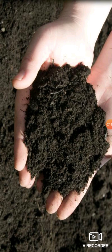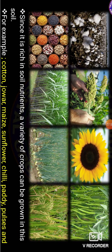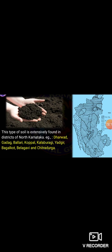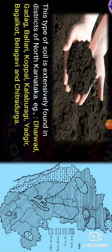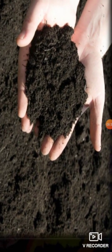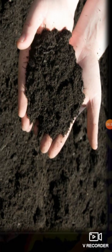Crops grown on black soil include cotton, jowar, maize, sunflower, chili, paddy (batta), and pulses. This type of soil is extensively found in the districts of North Karnataka, such as Dharwad, Gadag, Ballari, Koppal, Kalaburagi, Yadgiri, Bagalkote, Belagavi, and Chitradurga.